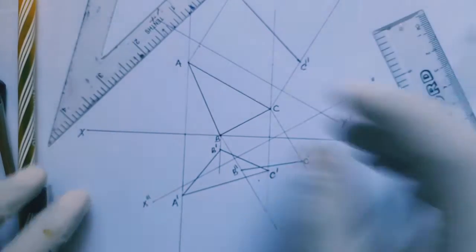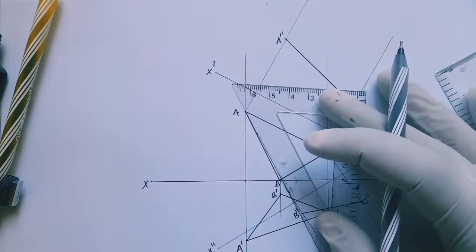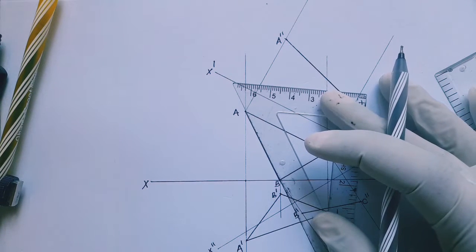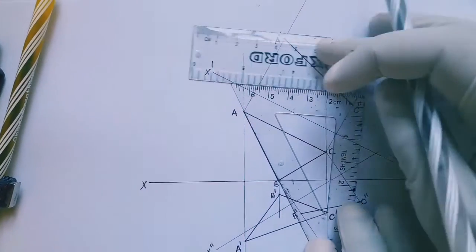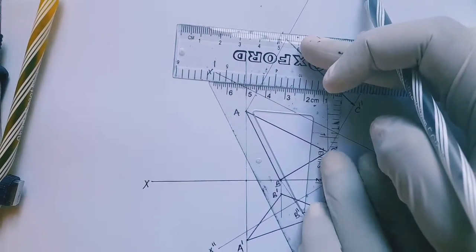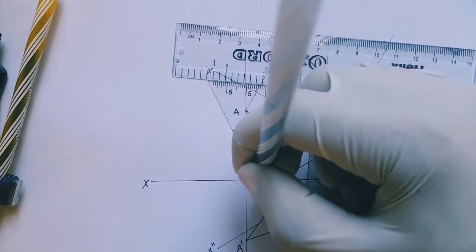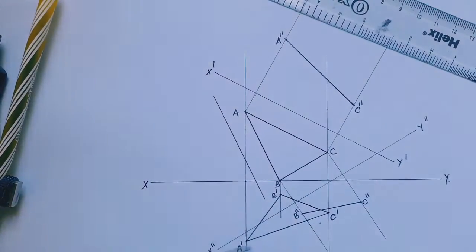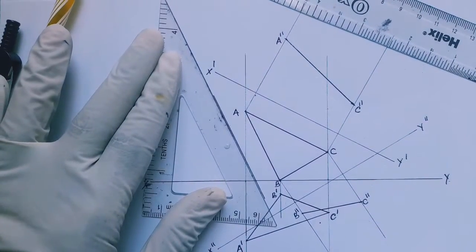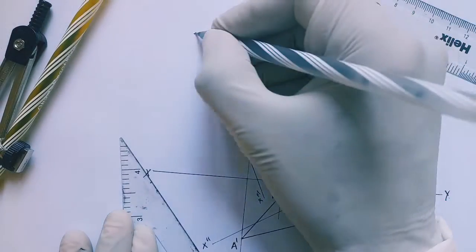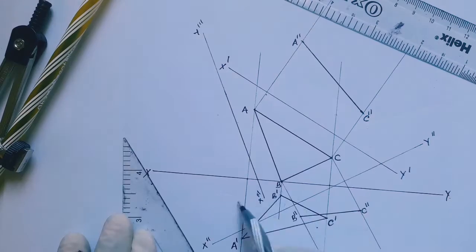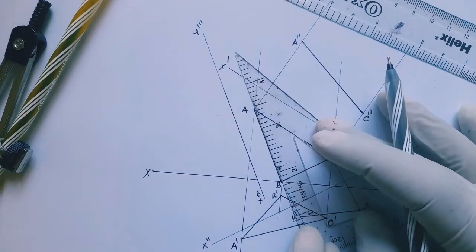Now lastly, let's draw a true length for AB. Again, as usual, let's draw a parallel line here to AB. Then using another set square, this plane we can call X triple prime Y triple prime.